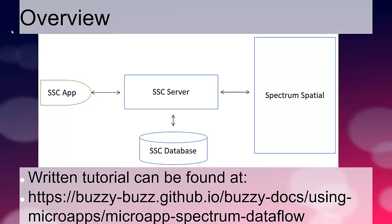This application works such that the left-hand side is the Spectrum Spatial Connect app — it could be on a mobile device or in the browser — communicating through to the Spectrum Connect server. When a new row is inserted, that Spectrum Connect server will then invoke a web service on Spectrum Spatial. That web service will prepend the word 'hello' in front of whatever was passed to it, and send a response back through to the Spectrum Spatial Connect server, which in turn will send a response back to the Spectrum Spatial Connect app.